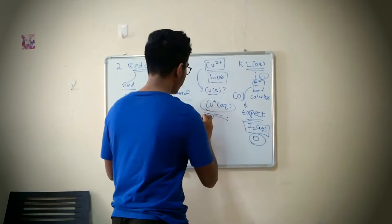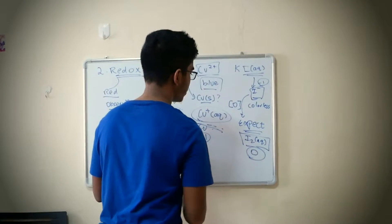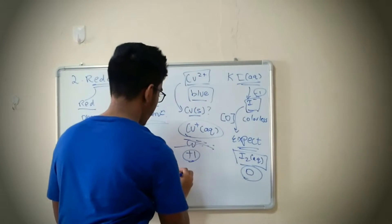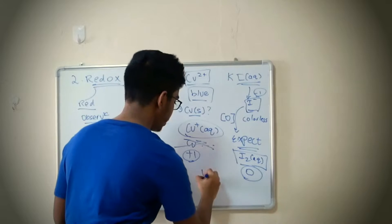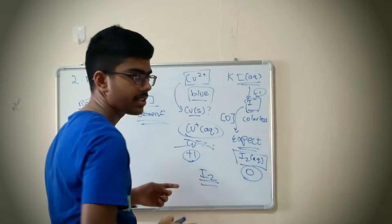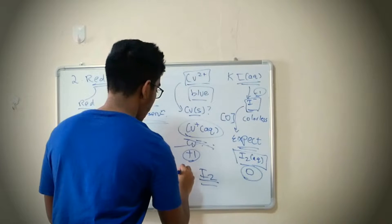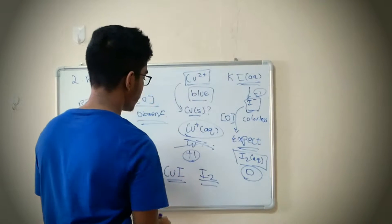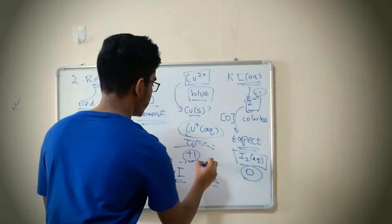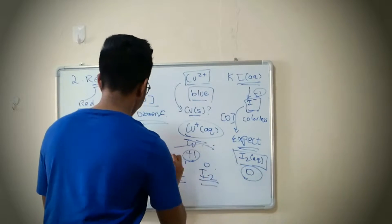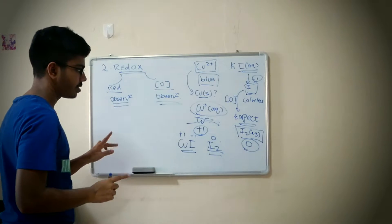So the product, copper would have a plus one oxidation state. When this and this react, there's I2 in the product. But the second one is copper iodide. This is plus one, this is minus one, this is zero. As I mentioned here, two observations you guys need to note.